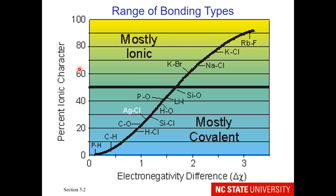Here in this chart, we have percent ionic character on the y-axis and the electronegativity difference on the x-axis. As electronegativity difference increases, we get more ionic compounds — that is what we would predict for potassium with bromine or rubidium with fluorine. On the other hand, mostly covalent compounds are composed mostly of nonmetals, as we would predict for carbon and oxygen or silicon and chlorine.